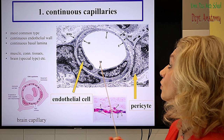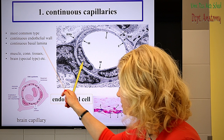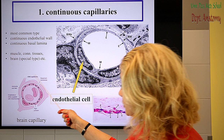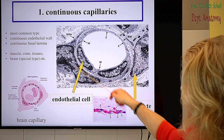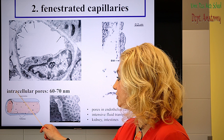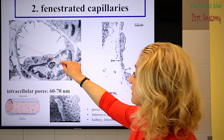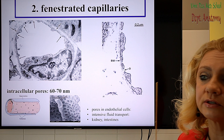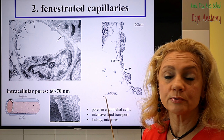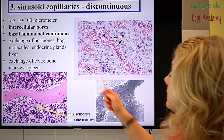Continuous capillaries have a continuous endothelial wall and a continuous basal lamina. They are found in most tissues — muscle, connective tissue. A special type of continuous capillary is found in the brain. In the electron micrograph you can see the endothelial cells and a pericyte. Fenestrated capillaries contain intracellular pores — little intracellular fenestrae — which enable very intense fluid transport, typical in organs with absorption or reabsorption, such as the intestine and kidney.